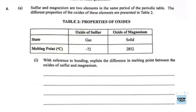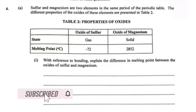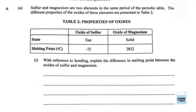With reference to bonding, explain the difference in melting point between the oxides of sulfur and magnesium. We're going to be talking about the bonding. It's hard to talk about the bonding without talking about the structure, but we want to be very disciplined so we can get our full marks.